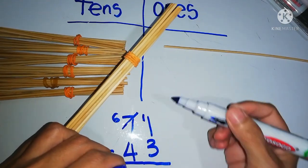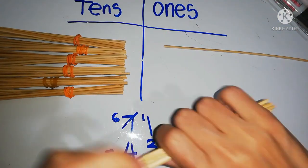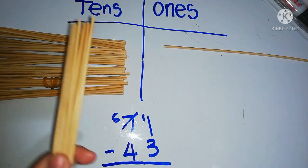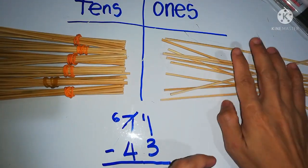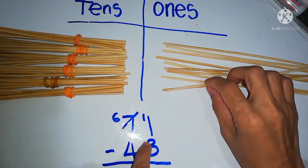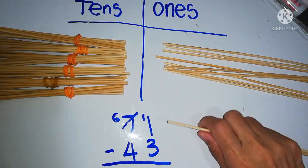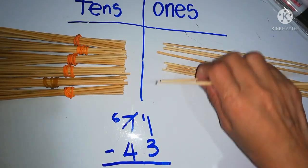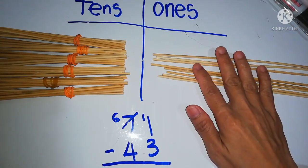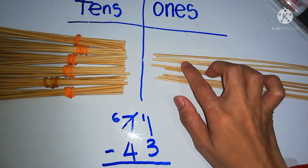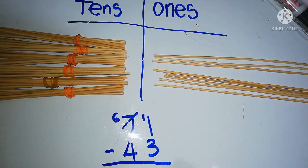We take 1 ten. So we have 10. Take away 3: 1, 2, 3. So we have 3, 5, 6, 7, 8 left. So we have 8 in the ones place.